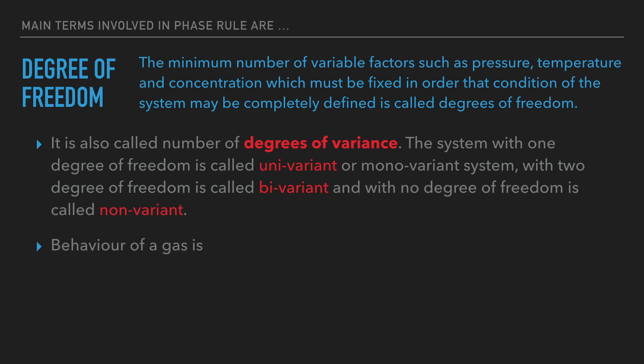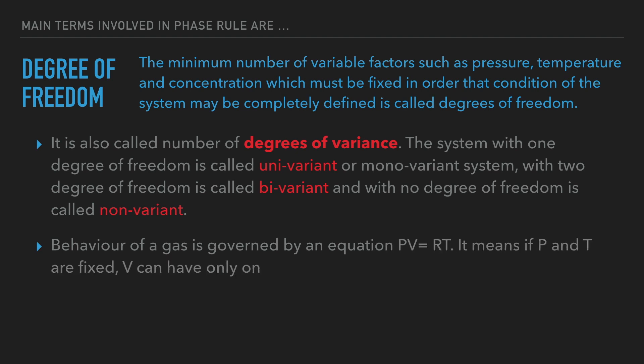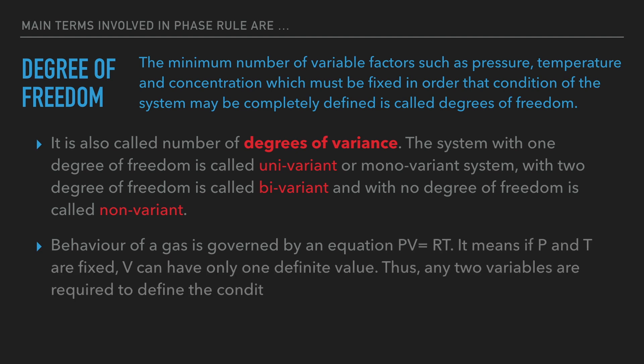The behavior of a gas is governed by the equation PV = RT. This means if pressure and temperature are fixed, volume can have only one definite value. Thus, any two variables are required to define the condition of the system completely.